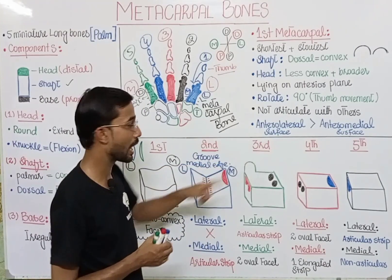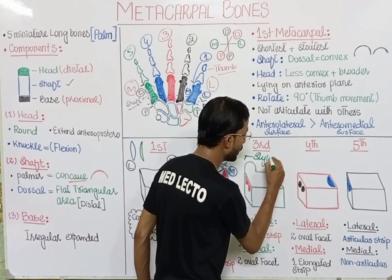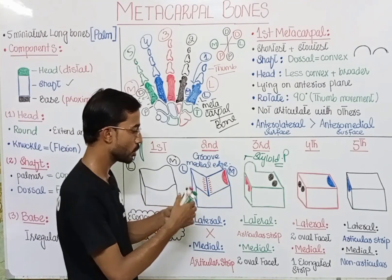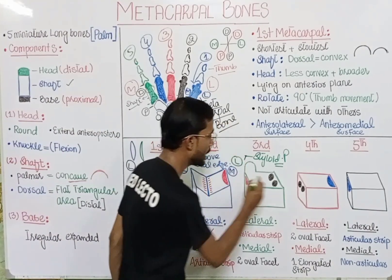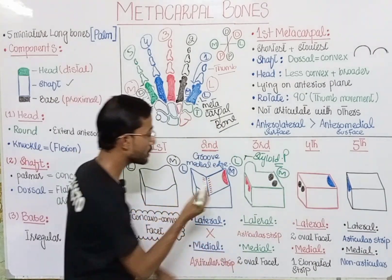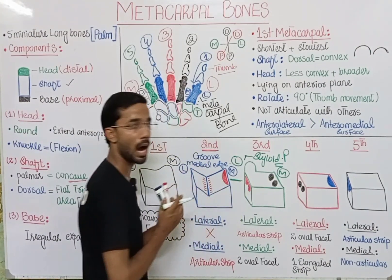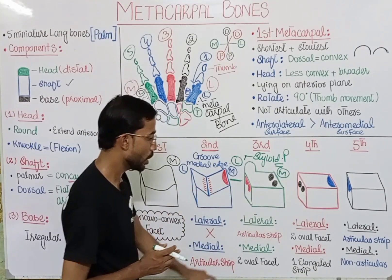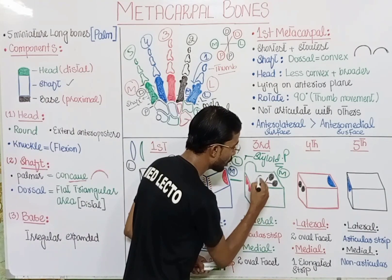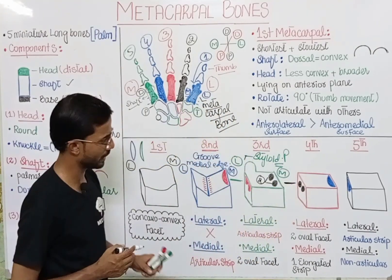In the third metacarpal, the most important feature is the styloid process. At the lateral side there is an articular strip that attaches to the second metacarpal, forming an articulation. At the medial side, you will see two oval facets that attach to the fourth metacarpal.